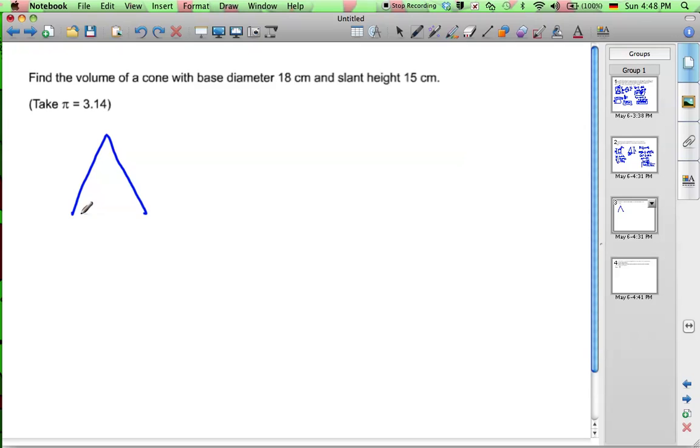We have a cone with a height—oh sorry, a slant height of 15 centimeters. That's not the height at all, that's the slant height. This is the height, and the diameter of the cone is 18, so the radius of the cone is 9.